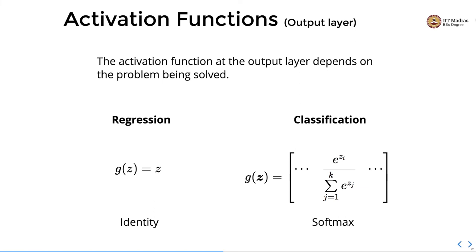The activation function for the output layer depends on the problem being solved. For regression, we use linear activation — the output is passed as-is. For binary classification, we use a single neuron with sigmoid activation. For multi-class classification, we use the softmax activation function: softmax(z_i) = e^{z_i} / Σ_j e^{z_j}, summing over all k classes. This ratio gives the probability of class i, producing a probability distribution over all k classes.